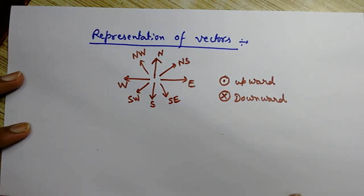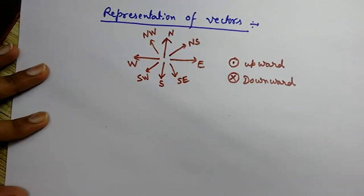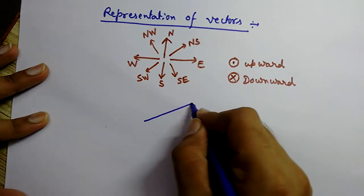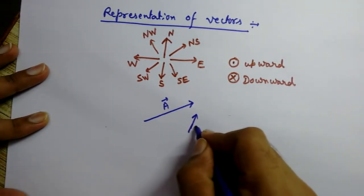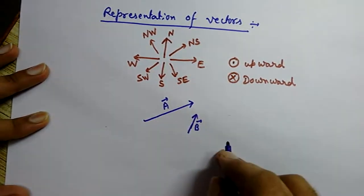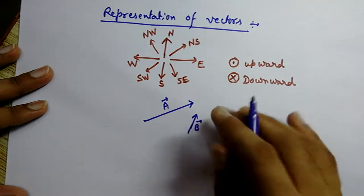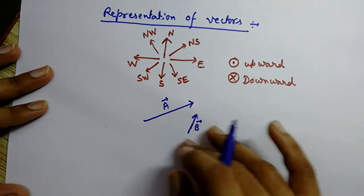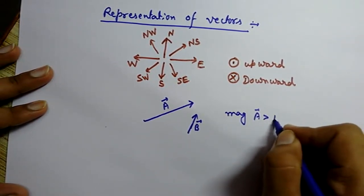One more thing: the length of the vector represents its magnitude. If I have two vectors — vector A and vector B — the length of these vectors represents the magnitude. Here vector A is having more length, so its magnitude is higher than vector B. We can see vectors A and B are not the same in magnitude; the magnitude of A is more than B.